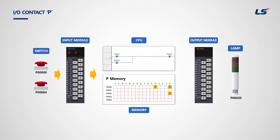As you can see from the picture in the center, the first row of word P0000 is composed of 16 bits from P00 to P0F. As the ladder program is written, when P0 and P4 bits are on, bit P20 on the output module is also turned on. Modules other than digital input and output do not use P memory.